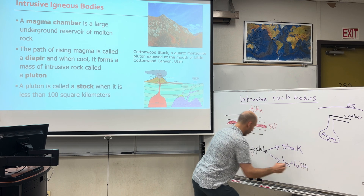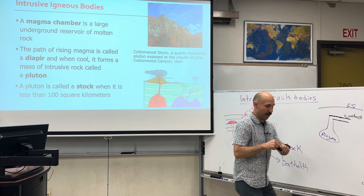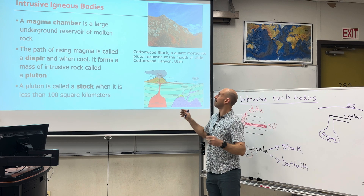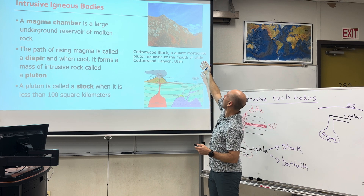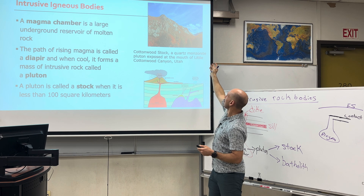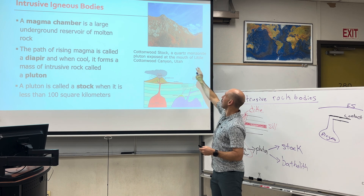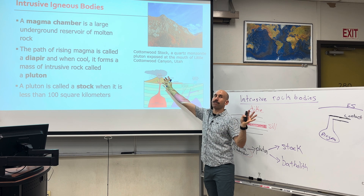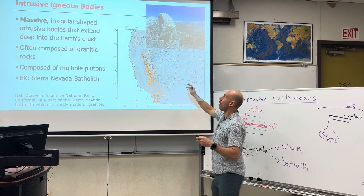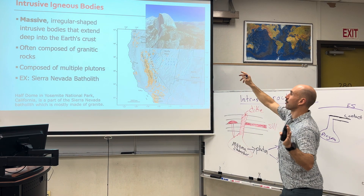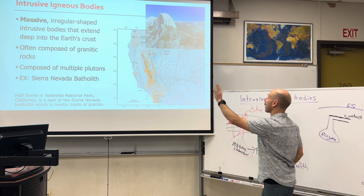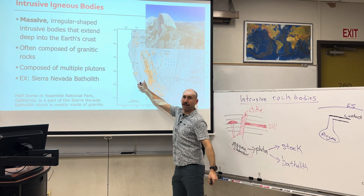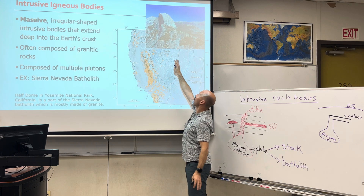This is really cool. The batholith — here's a stalk, the Cottonwood stalk of quartz monzonite pluton in Utah — pretty big but not grand scale. On a grand scale, massive irregular-shaped intrusive bodies like the Sierra Nevada batholith. There's Half Dome. The Sierras are a batholith — a bunch of plutons that formed underneath the earth, all merging together to form one giant batholith.